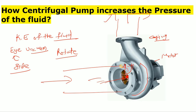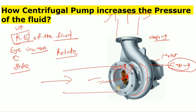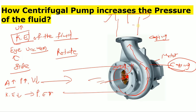The fluid will go outward because of centrifugal force — the kinetic energy has increased, meaning velocity has increased. Now, the purpose of the casing is that it gradually increases the area. As the area increases, velocity decreases, so the kinetic energy of the fluid decreases and pressure energy increases. We get our fluid from the discharge side — for example, if the suction side pressure is 3 kg per centimeter square, the discharge side may be 10 kg per centimeter square.